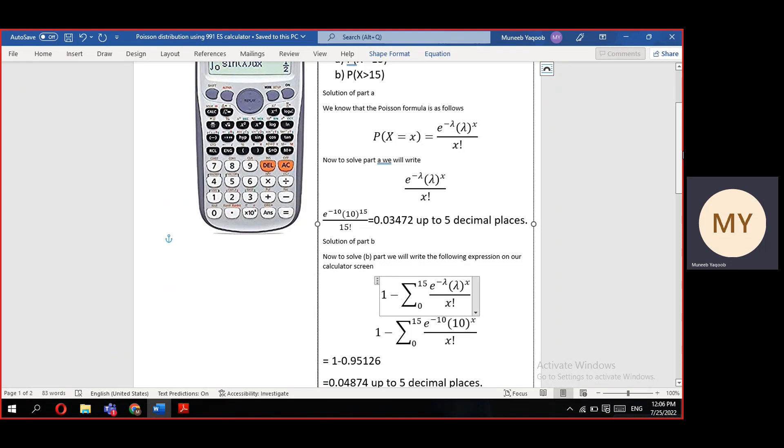To do this in your 991 ES calculator, first press the shift button and then the summation button just beneath the on button. A summation sign will appear. Now enter the lower limit as 0 and the upper limit as 15. After putting these limits,